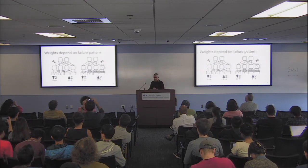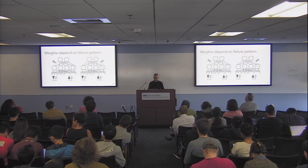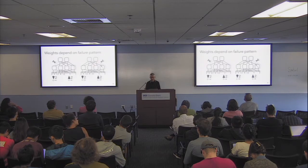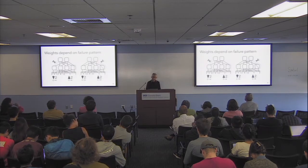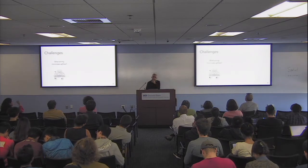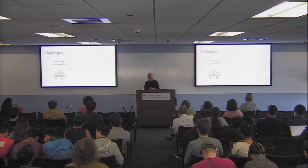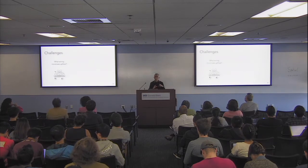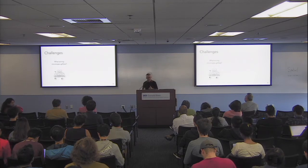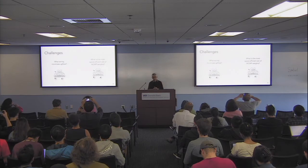The weights also depend on the failure — if a failure happens in one place you route traffic one way; if failure happens elsewhere you route very differently. This brings us to the key questions in the paper: first, what wiring minimizes the upflow? Second, what is the set of weights we can calculate?